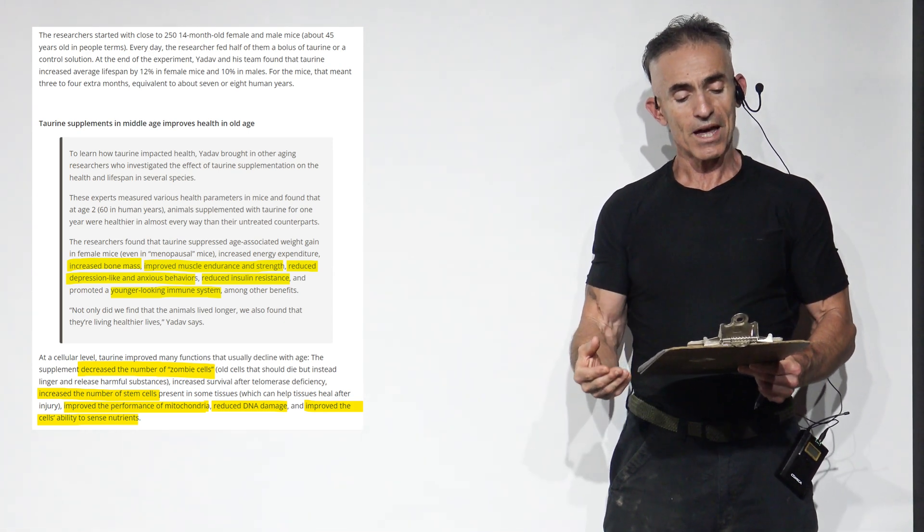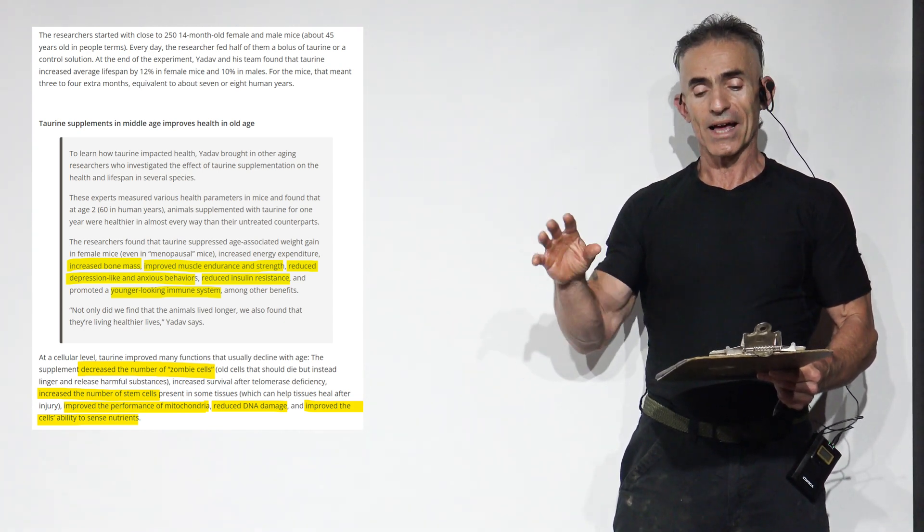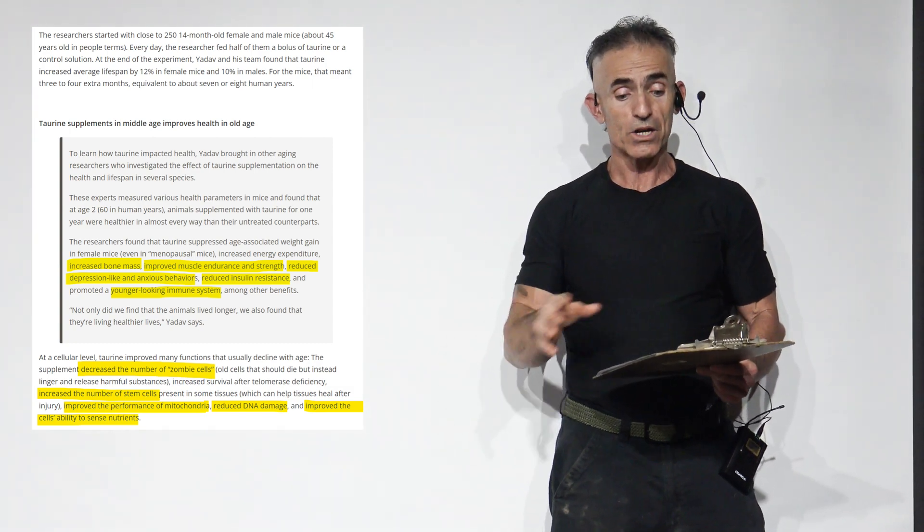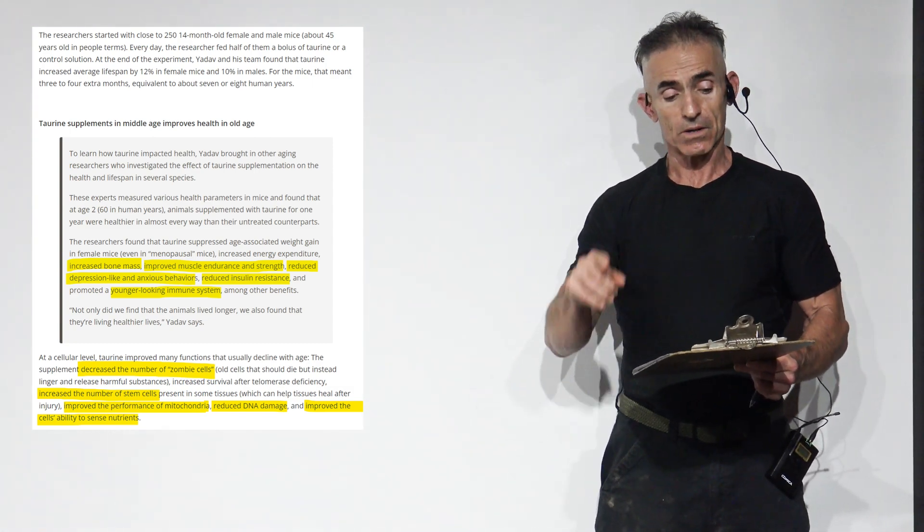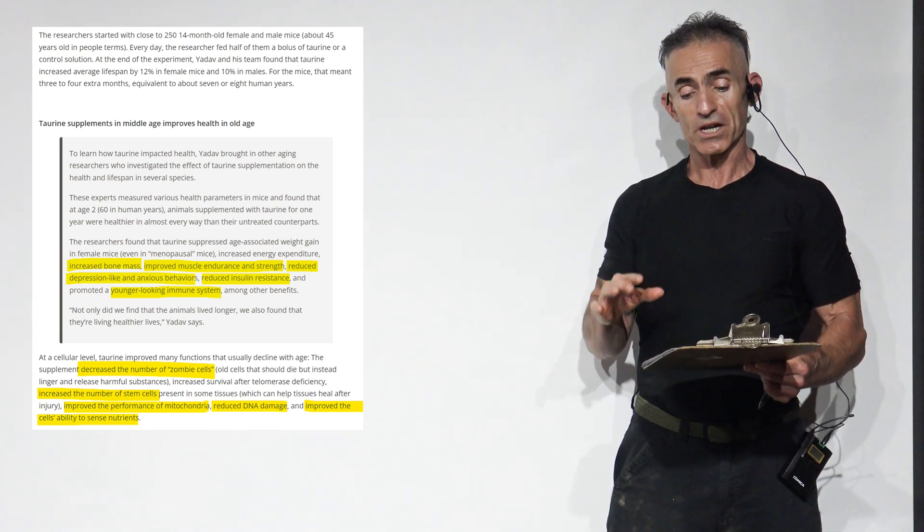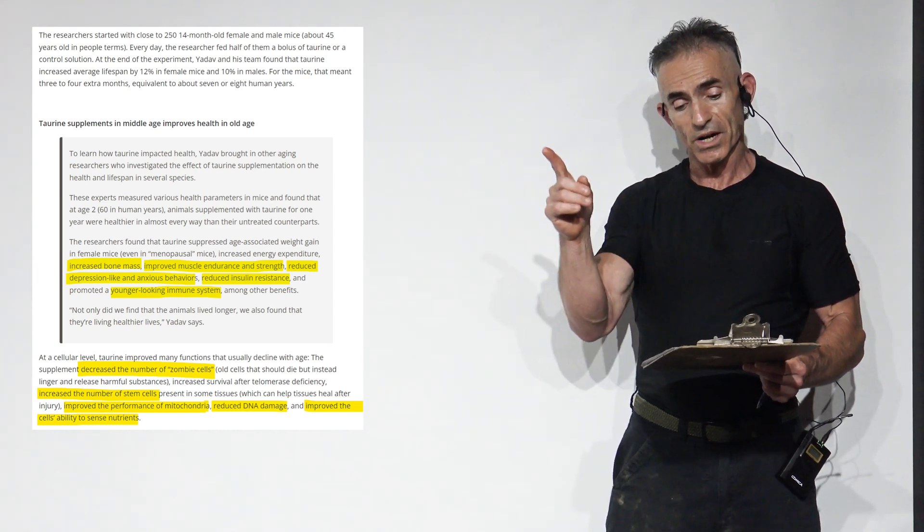Now I want to skip ahead and reiterate: when they did a metabolomic analysis, taurine was one of the most dramatically down-regulated nutrients that they discovered. To proceed, the experts measured various health parameters in mice. There's also human observations. We'll get into it in a second.